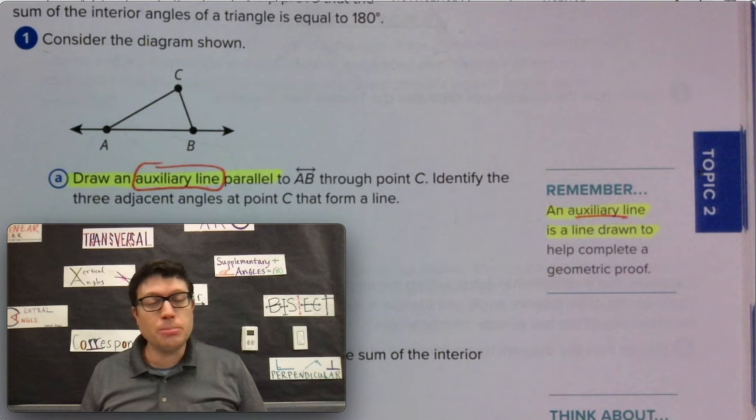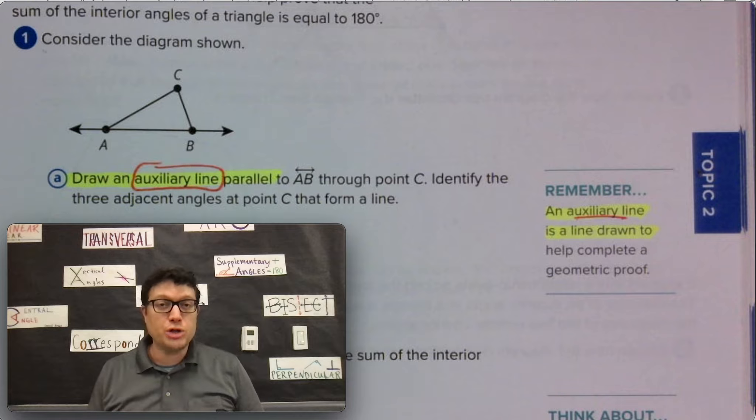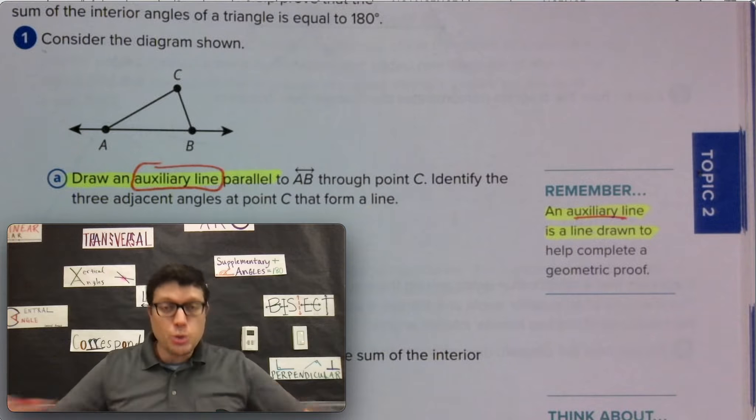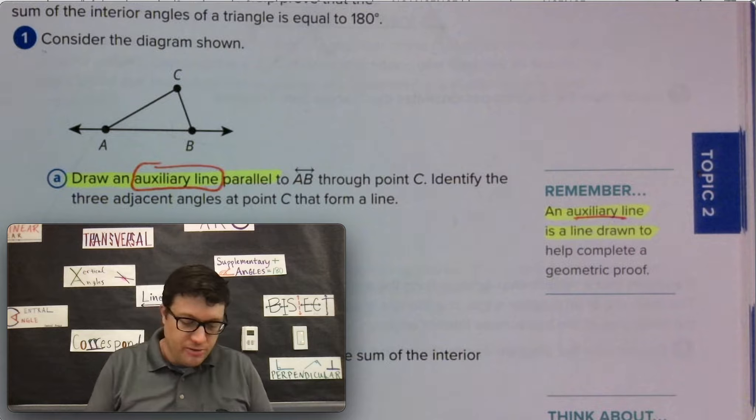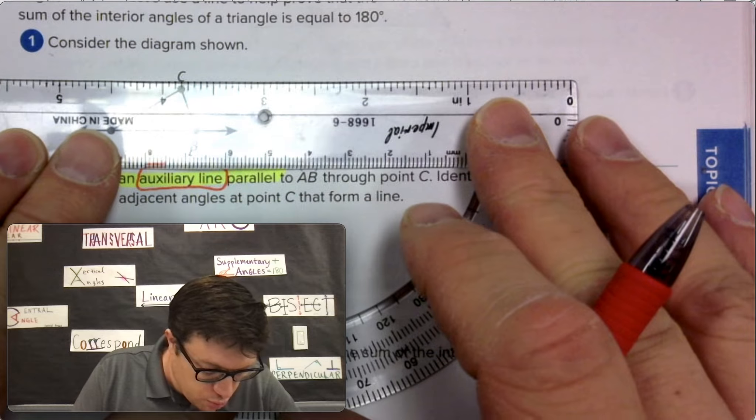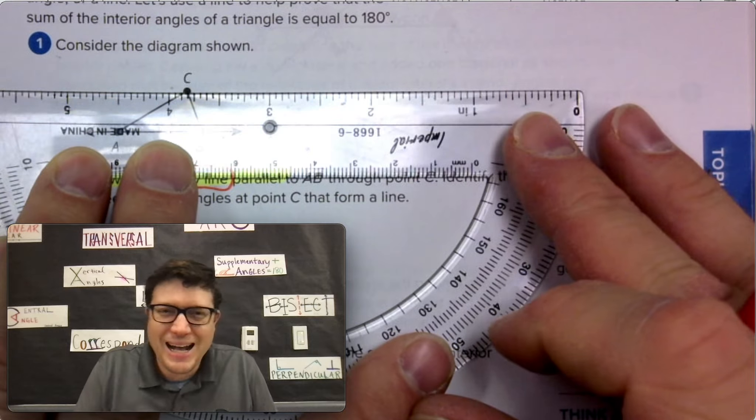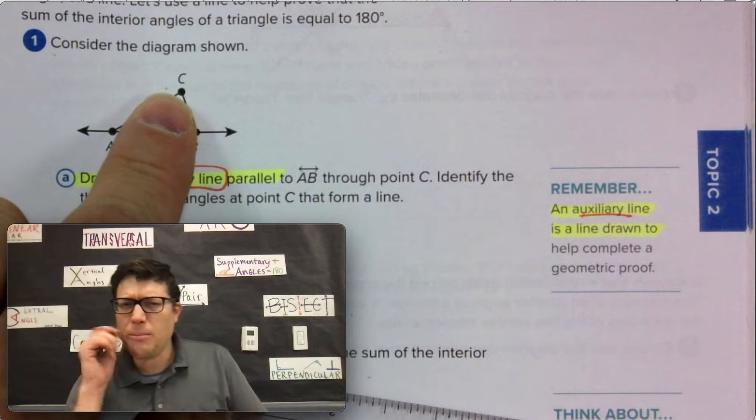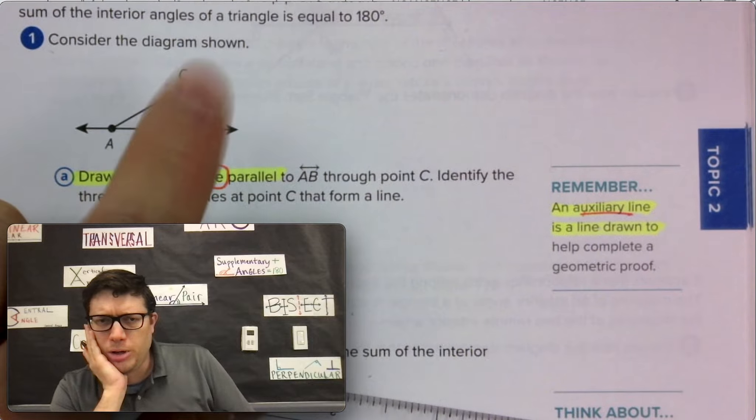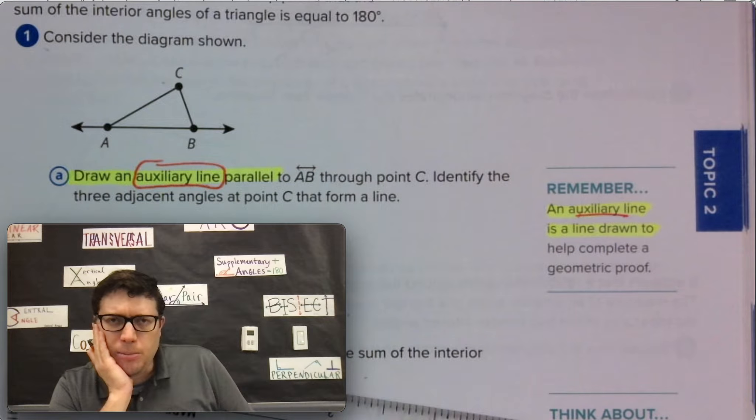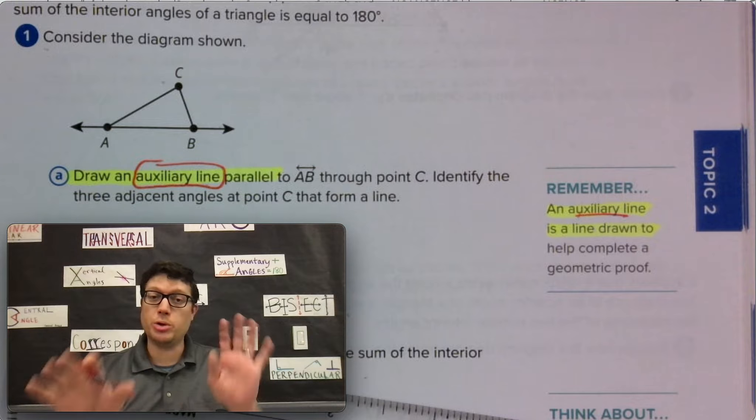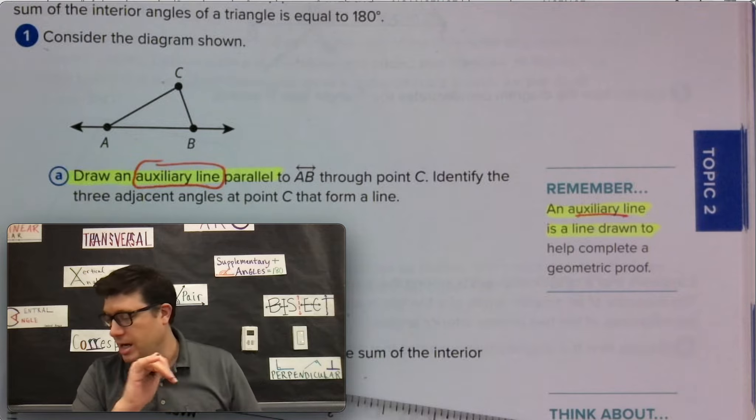An auxiliary line is a line drawn to help complete a geometric proof. So we're going to draw one using the ideas or notions that we've come up with over time, but it doesn't really necessarily show up when we first started. It has to be parallel. So I'm going to draw one line. Can you draw more than one line through point C that's parallel to AB? With Euclidean geometry, no. Only one line can be drawn.